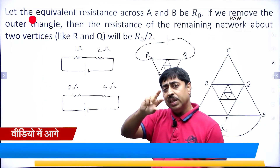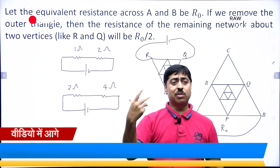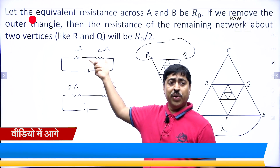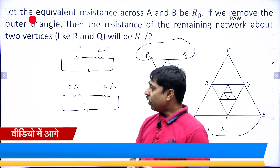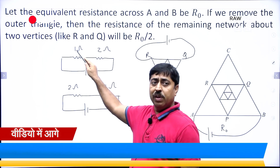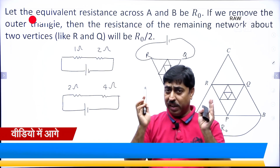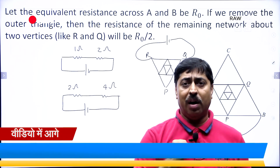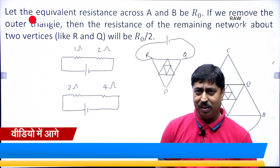If you double the value of each and every resistance, then the equivalent resistance will double. The equivalent is 3 ohm here; the equivalent is 6 ohm. Similarly, if you half the value of each and every resistance in a given circuit, then the equivalent resistance will also half. This is a very important thing.